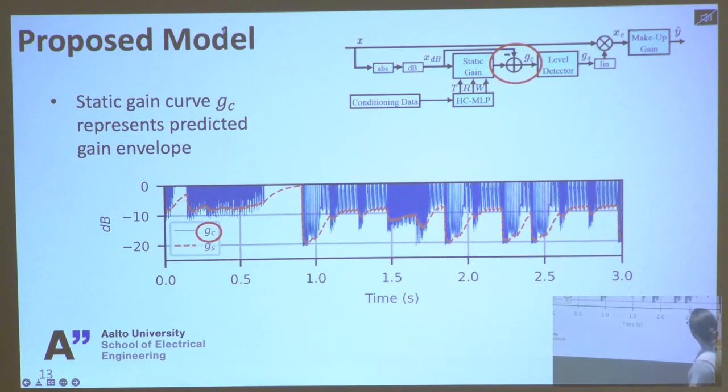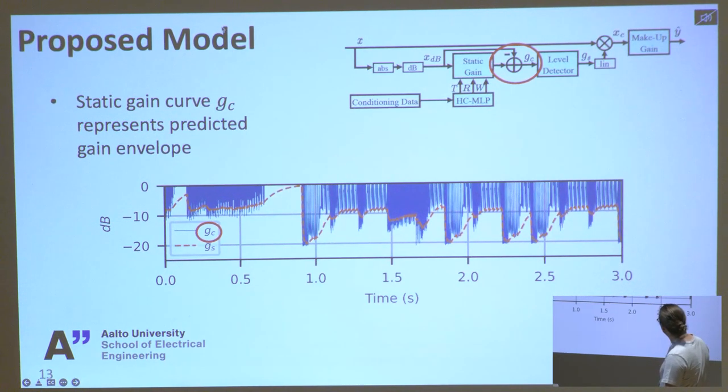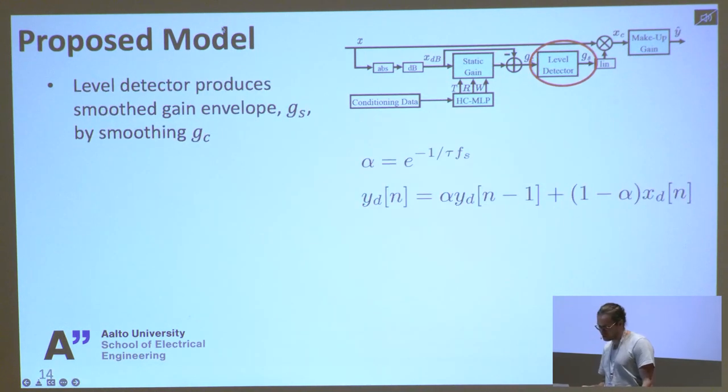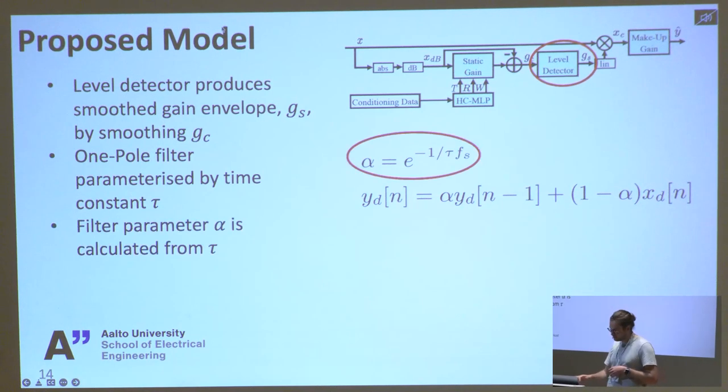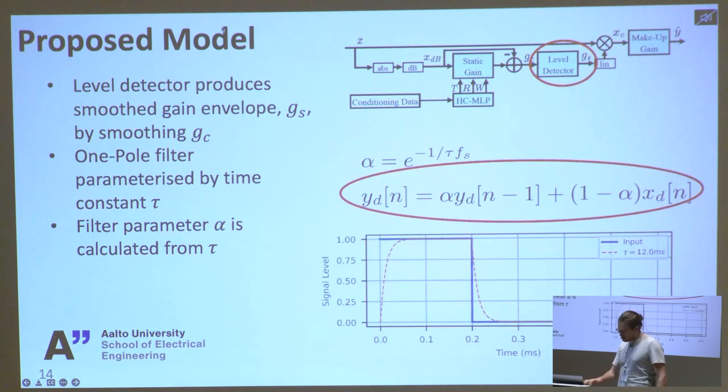After the static gain computer, you have this gain characteristic curve. The one in blue is what we get out of the static gain computer, which is really jagged and spiky. We don't want to apply that to our signal straight away, so we apply smoothing through this level detector block, which we're implementing as a one-pole filter. It's going to produce a smooth gain envelope. We parameterize this one-pole filter with a time constant tau. You can calculate the corresponding filter parameter alpha using this formula, which ensures the filter stability.